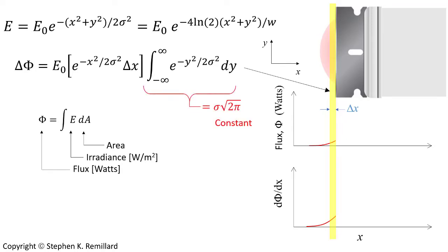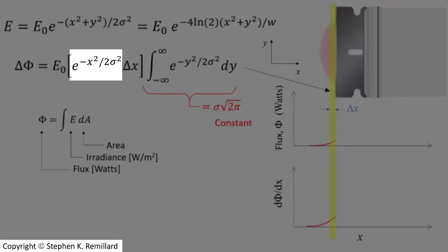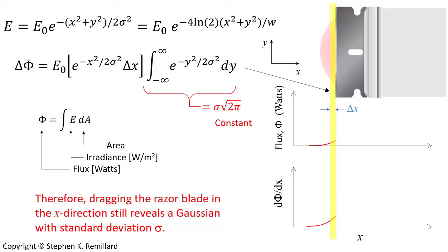We know what that integral is — it's just a constant. The integral of a Gaussian over all space is just the standard deviation times the square root of 2π. The point is that it equals a constant, meaning the power picked up by the detector is described by a Gaussian in x with the same standard deviation. So dragging the razor blade across the laser beam provides the same full width at half maximum as a one-dimensional distribution, even though it is a two-dimensional distribution.